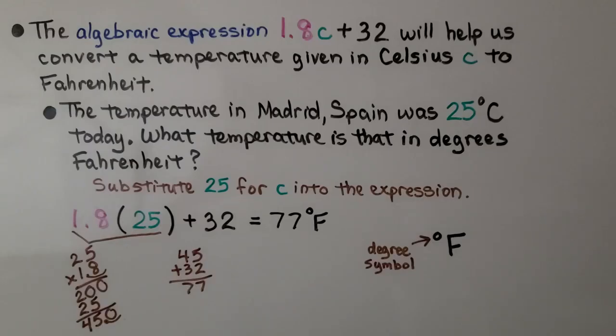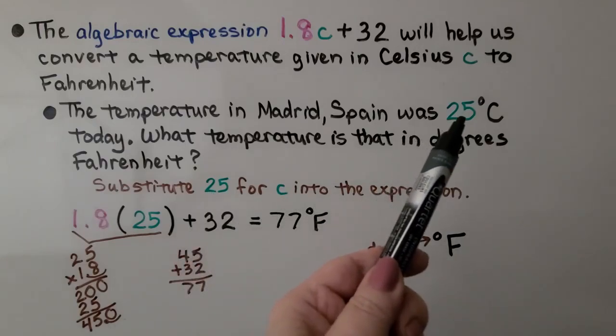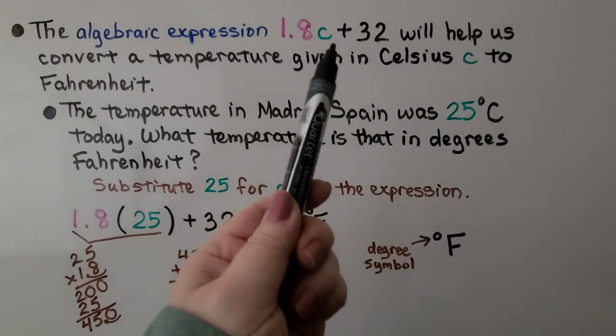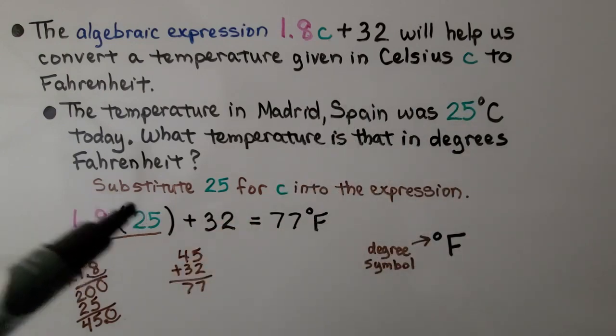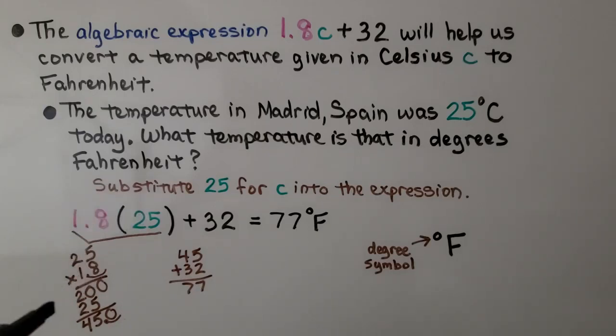The algebraic expression 1.8C + 32 will help us convert a temperature given in Celsius C to Fahrenheit. The temperature in Madrid, Spain was 25 degrees Celsius today. What temperature is that in degrees Fahrenheit? We substitute 25 for C. That's the degrees Celsius. So we have one and eight tenths times 25. We can use scratch paper to do our multiplication on the side. We get 45.